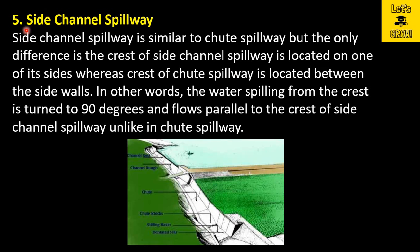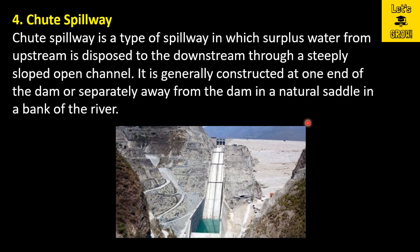The fifth one is the side channel spillway. A side channel spillway is similar to a chute spillway, but the only difference is that the crest of the side channel spillway is located on one of its sides, whereas the crest of a chute spillway is located between the side walls. In other words, the water spilling from the crest is turned 90 degrees and flows parallel to the crest of the side channel spillway, unlike in a chute spillway.